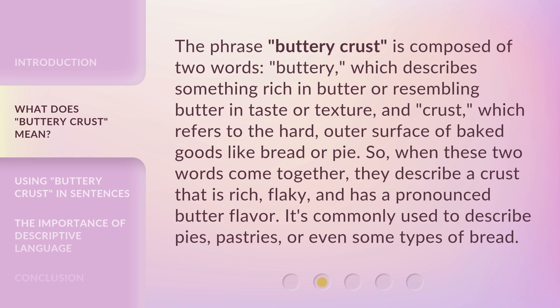The phrase buttery crust is composed of two words: buttery, which describes something rich in butter or resembling butter in taste or texture, and crust, which refers to the hard outer surface of baked goods like bread or pie. So when these two words come together, they describe a crust that is rich, flaky, and has a pronounced butter flavor. It's commonly used to describe pies, pastries, or even some types of bread.